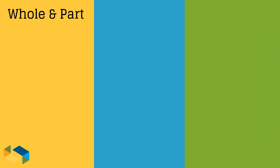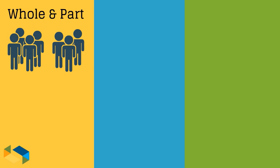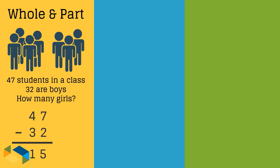Firstly, subtraction is used when we have to identify a part from a whole. Say 47 students in a class, 32 of them are boys. How many are girls? As we calculated before, the answer is 15 girls.